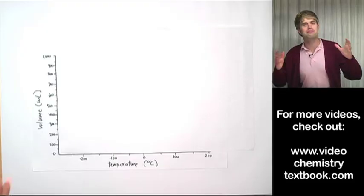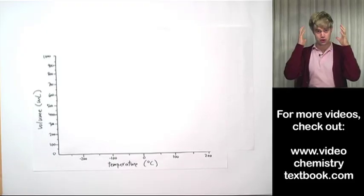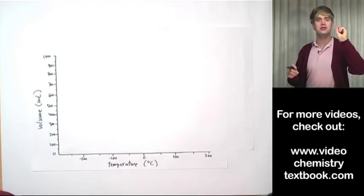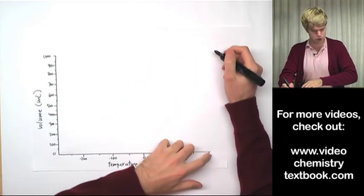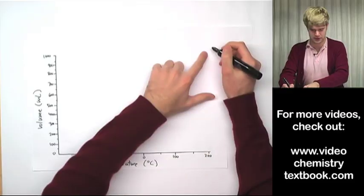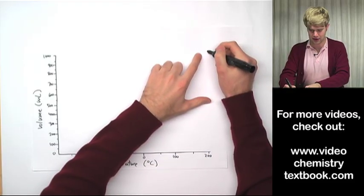So I take my magic balloon and I heat it up to 200 degrees Celsius and it takes up a thousand milliliters of volume. So let me plot that right here on my graph. 200 degrees Celsius and a thousand milliliters.